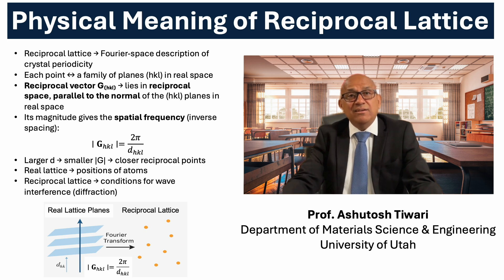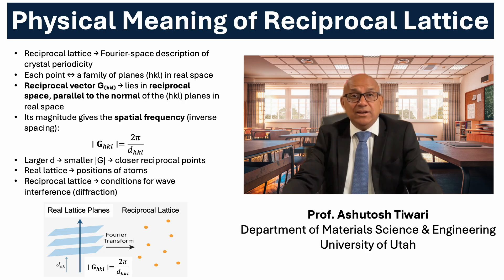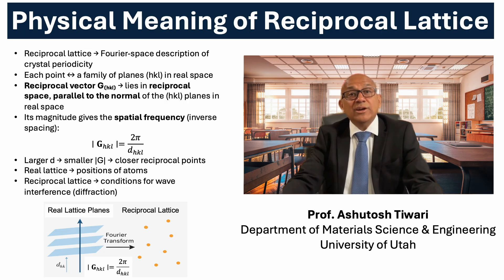The vector G(hkl) lies in reciprocal space, but its direction is parallel to the normal of those h, k, l planes in real space. Its magnitude, written as |G(hkl)| = 2π / d(hkl), tells us how tightly the planes are spaced. If the spacing d(hkl) is smaller, the reciprocal lattice vector becomes larger. So the real lattice tells us where the atoms are located, while the reciprocal lattice tells us where waves can interfere to produce constructive interference in diffraction. That is why reciprocal space, rather than real space, is the natural framework for understanding diffraction and wave propagation in crystals.